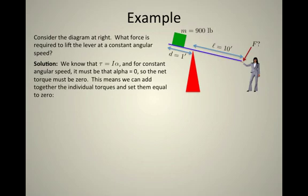Net means sum of all the torques acting on this mass. It's important to remember there's not just one. Gravity is exerting a torque because the gravitational force on this mass is pulling down at a distance of one foot away from the pivot point.